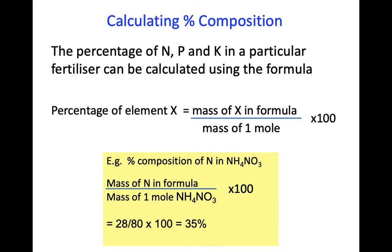For example, calculating the percentage composition of nitrogen in ammonium nitrate: the mass of N in the formula is 28 — we have two nitrogen atoms, each with a formula mass of 14, so 14 times 2 is 28. When we add the formula masses of each of the elements together we get 80. So it's 28 divided by 80 multiplied by 100, which tells us that in ammonium nitrate 35% of the mass is made up of nitrogen, and that is how we get those percentages on the side of a fertiliser packet.